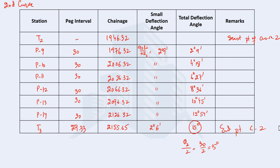This completes the setting out of the compound curve. We have calculated the chainages at key points T1, T2, and T3, and prepared the setting out tables using the deflection angle method for both curves. The verification checks confirm all calculations are correct.